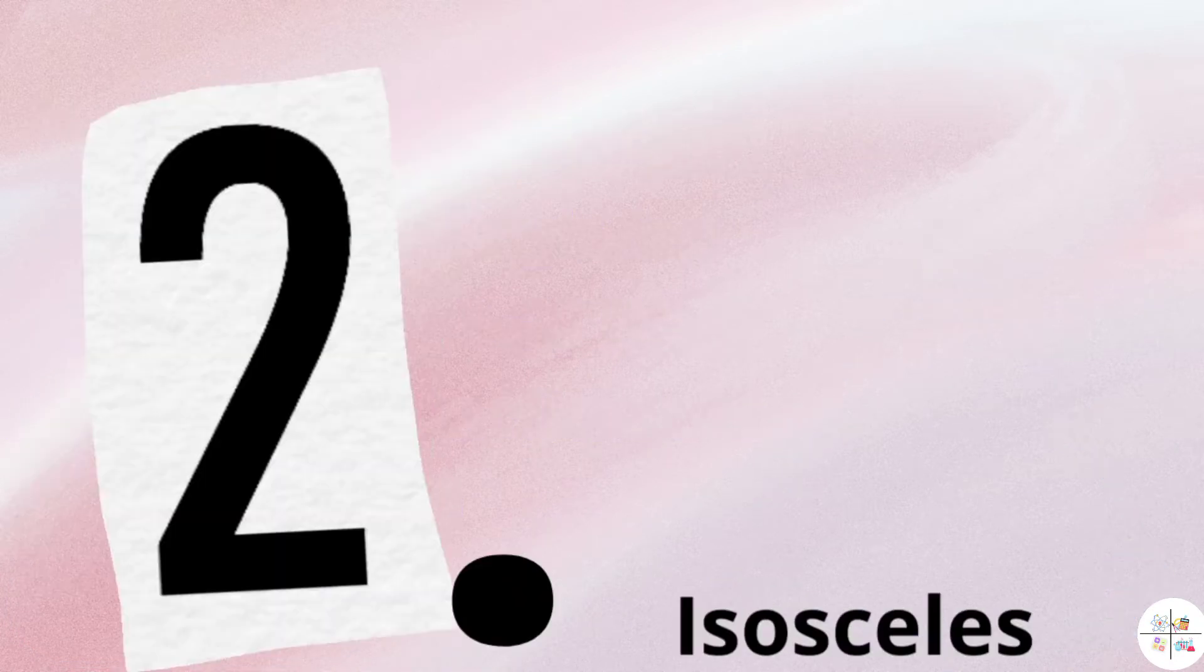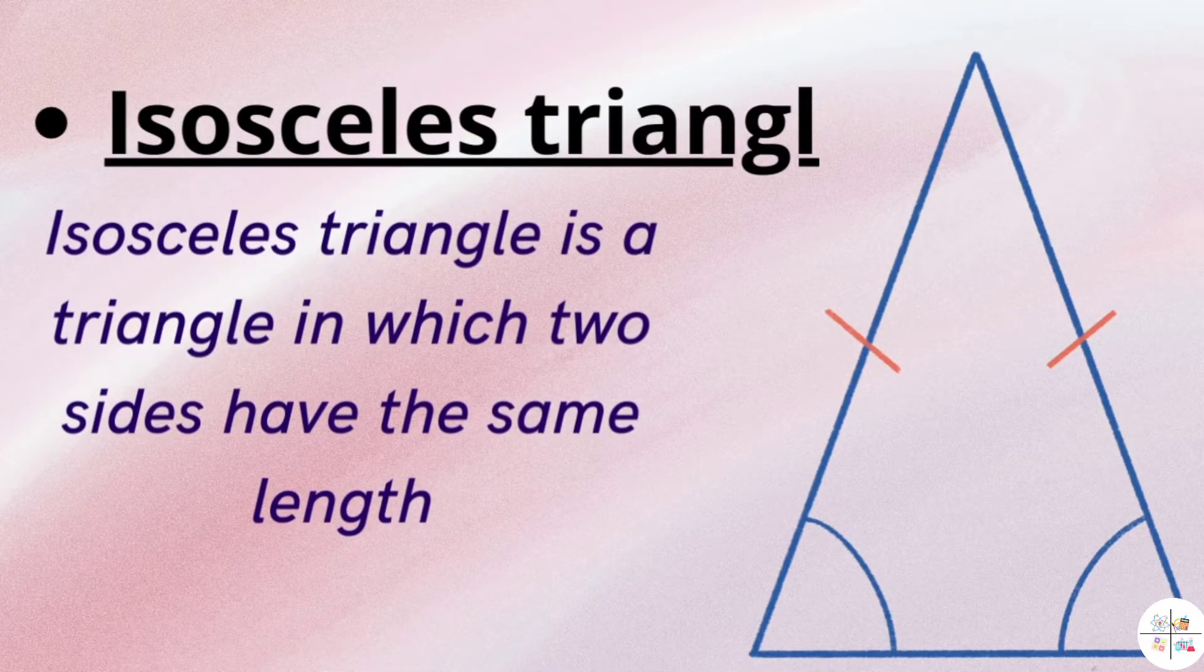An equilateral triangle is a triangle in which all three angles or sides are the same length. An isosceles triangle is a triangle in which two sides have the same length.